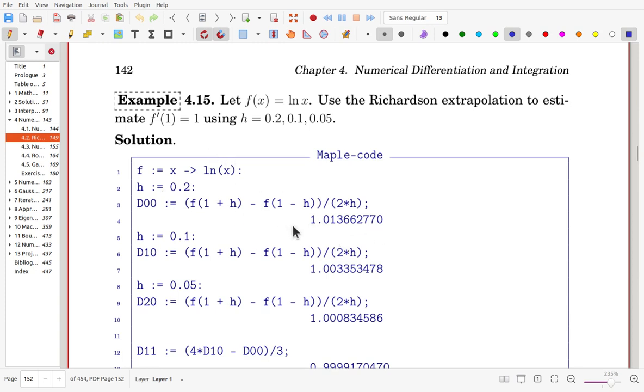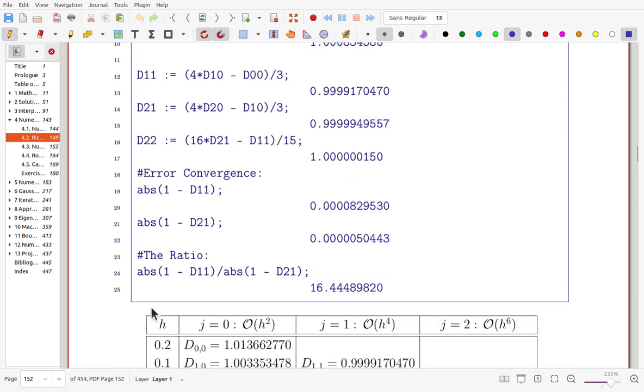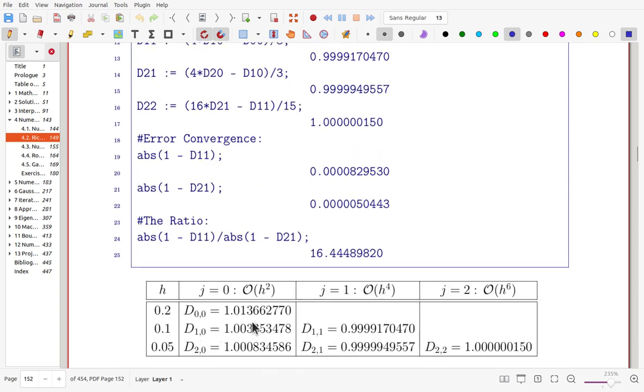True value is 1, so this portion is the error. Now, the h is halved, then we have this result, and again, one more halved, then we have that result. These three quantities will occupy the zeroth column of the D matrix.